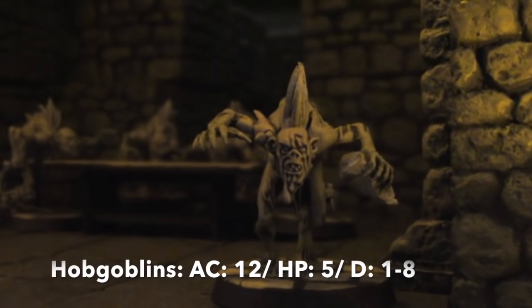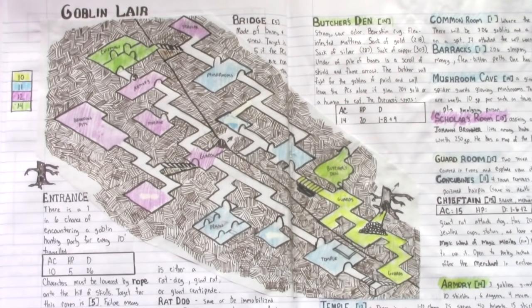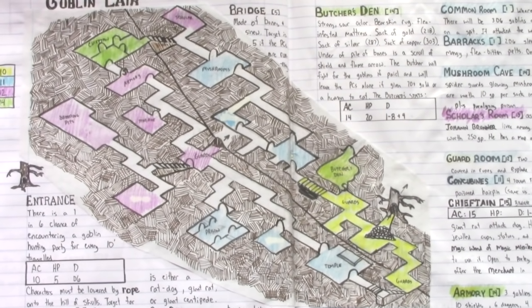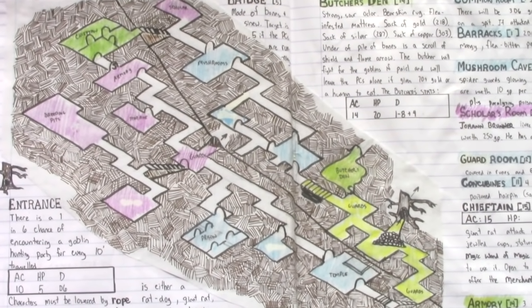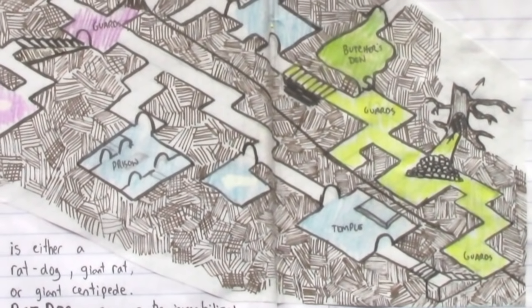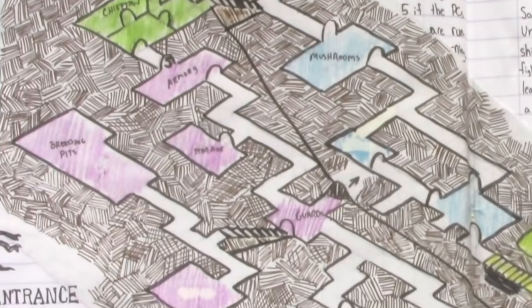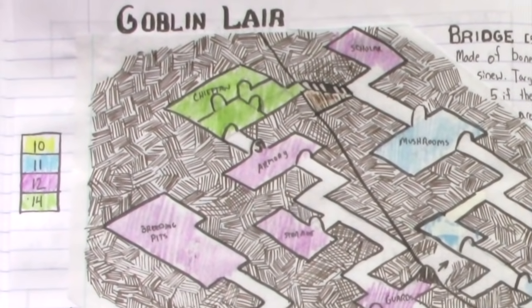The target number for the typical hobgoblin is 12. They have 5 hit points and do 1 to 8 in damage. Here's the completed overview of caves D and F — every color represents a target number. Yellow is 10, blue is 11, purple is 12 to 13, green is 14. In this manner we scale the encounters. The further the player characters move into the lair and up the steps, the more difficult the encounters become. That target number is what the player characters need to do everything in that room. Can the characters sneak up on the goblins and surprise them? It's a 10. Parley with the goblins — 10. Hit them — 10. Cast a sleep spell — 10. Search the room — 10.